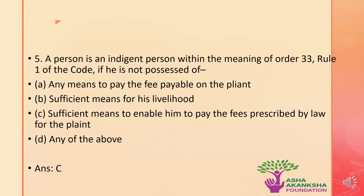The next question: a person is an indigent person within the meaning of Order 33 Rule 1 of the Code if he is not possessed of which of the following? The options are A. Any means to pay the fees available on the plaint, B. Sufficient means of his livelihood, C. Sufficient means to enable him to pay the fees prescribed by law for the plaint, or D. All of the above. The correct answer is option C: a person is an indigent person if he is not possessed of sufficient means to enable him to pay the fees prescribed by law for the plaint.